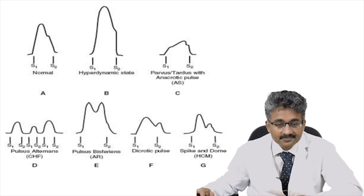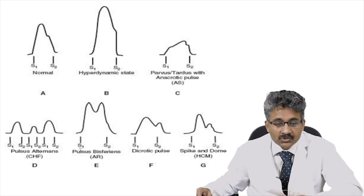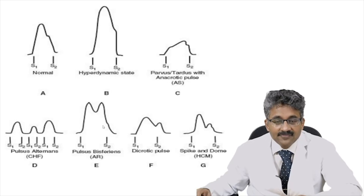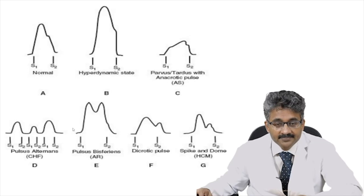Next is pulsus bisferiens — you can see two peaks occurring in systole only. Conditions causing pulsus bisferiens: normally it may occur in exercise and fever, while pathologically it is seen in aortic regurgitation, or aortic regurgitation combined with aortic stenosis, and HOCM.